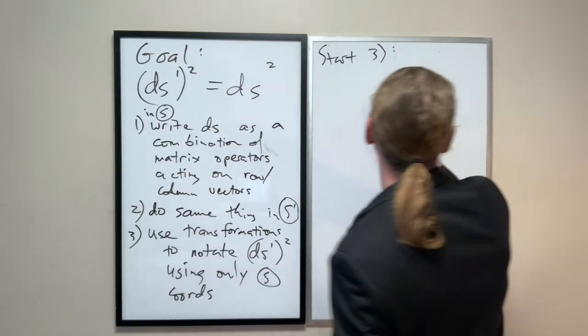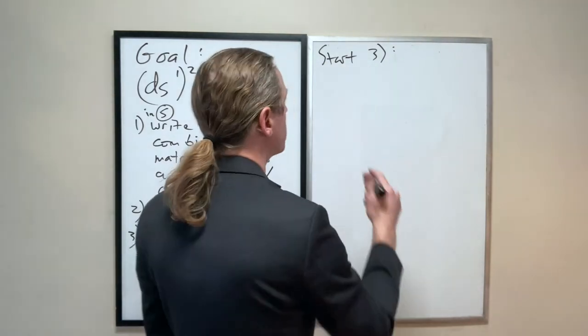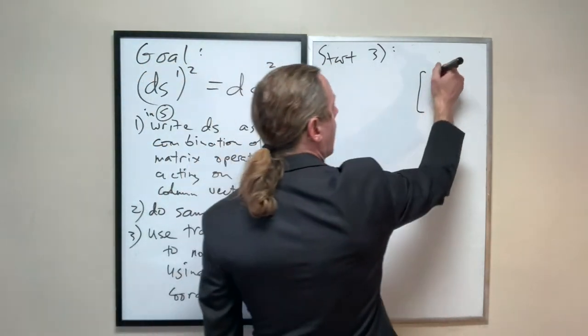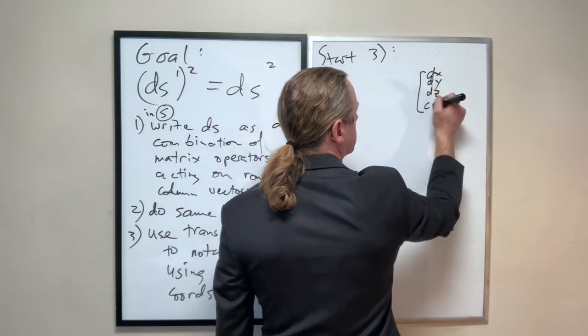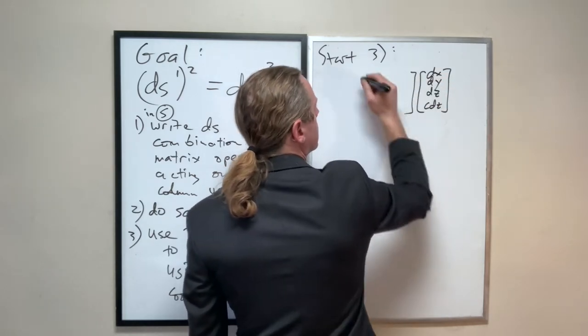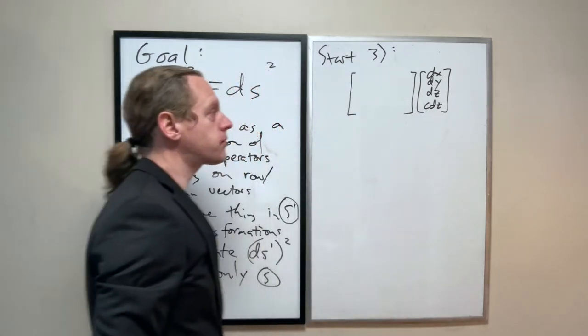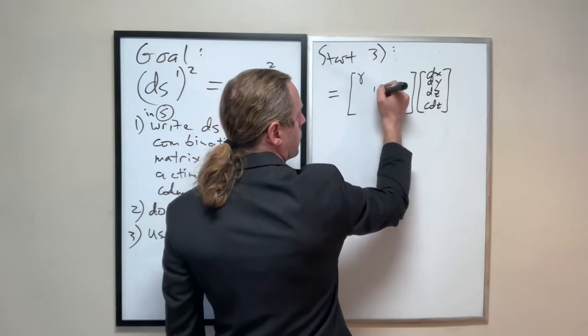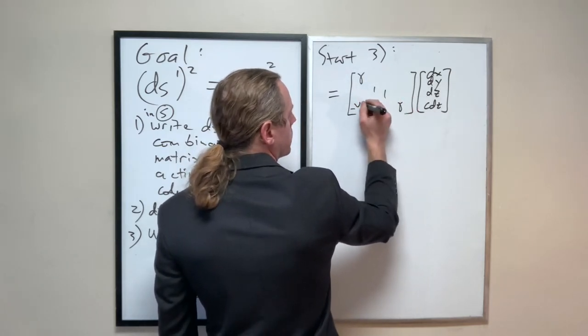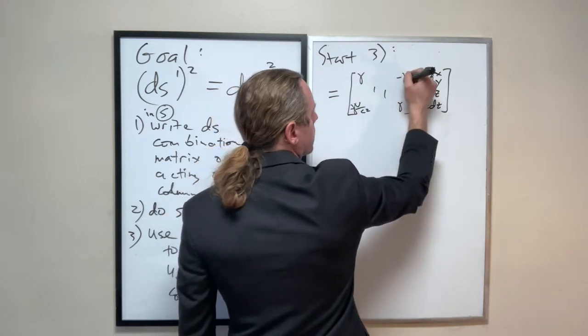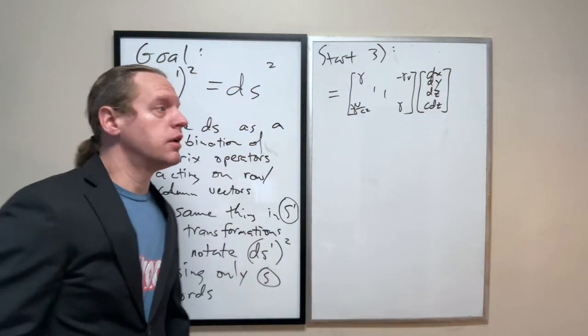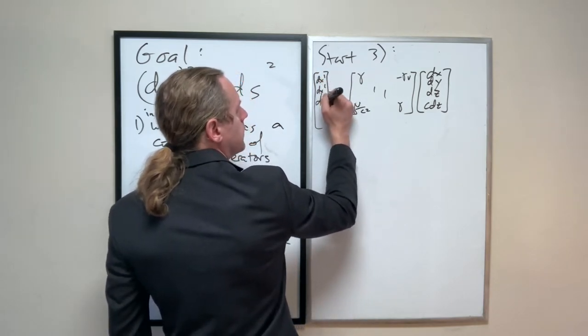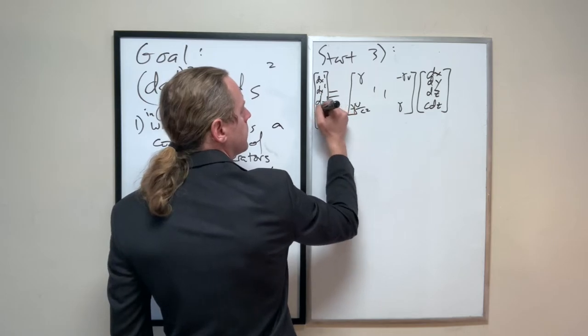We know that previously, when you have the... and I will write out one matrix just to show how we're going to formalize this here: dx, dy, dz, c dt, and you have your matrix here, the Lorentz transformation matrix, gamma, one, one, gamma, minus v over c squared, gamma, minus gamma v, whatever. That gave us out dx prime, dy prime, dz prime, c dt prime.